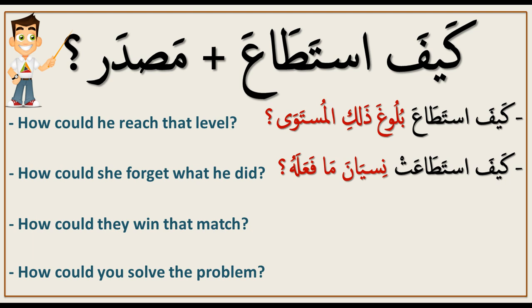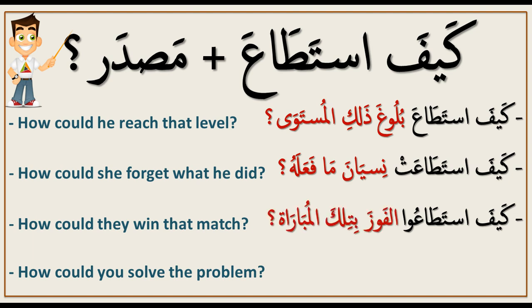'How could they win that match?' We say كيف استطاعوا because it's 'they.' And 'How could you solve the problem?' We say كيف استطعت — the مصدر for solving the problem follows the same pattern.